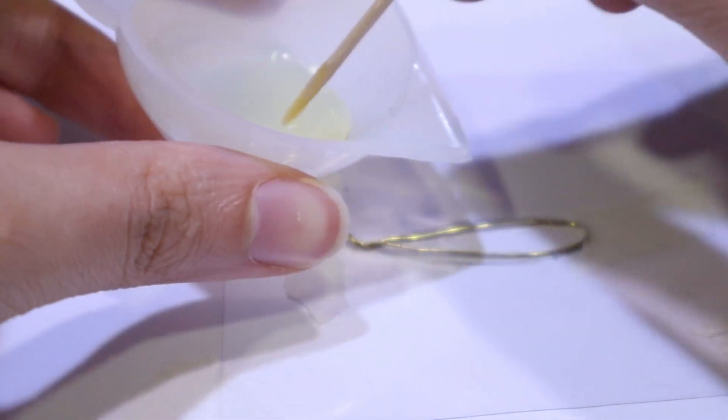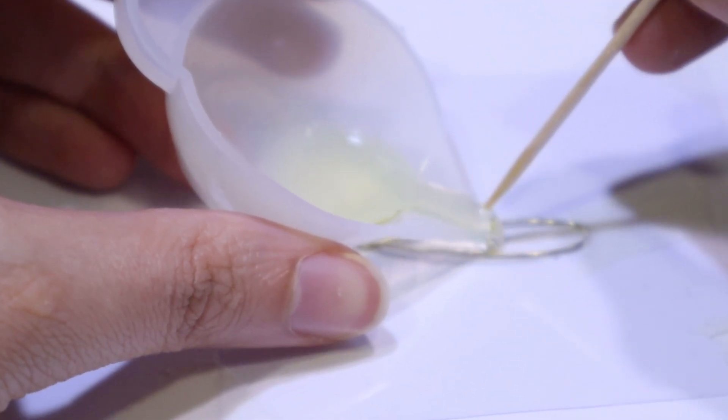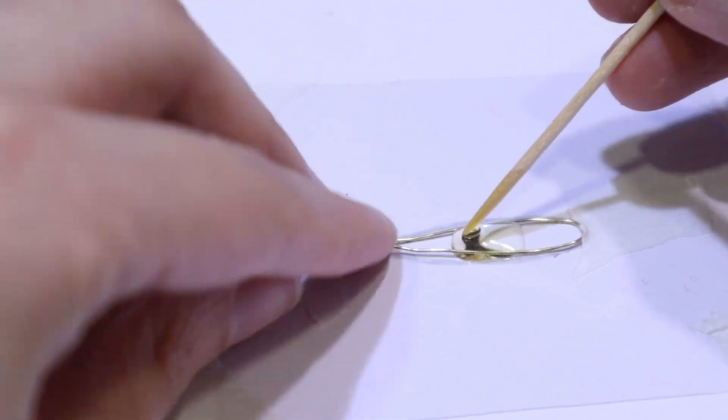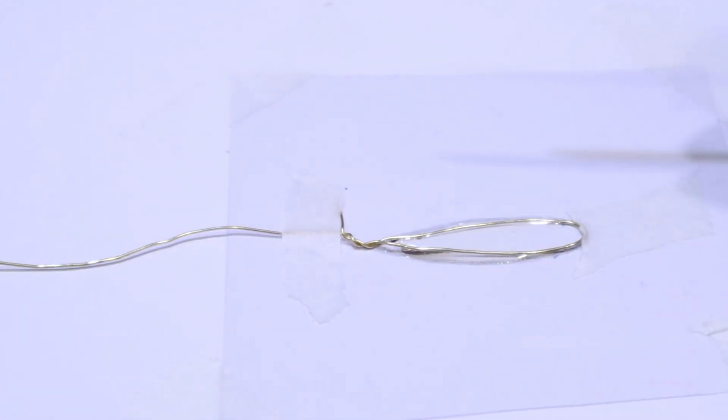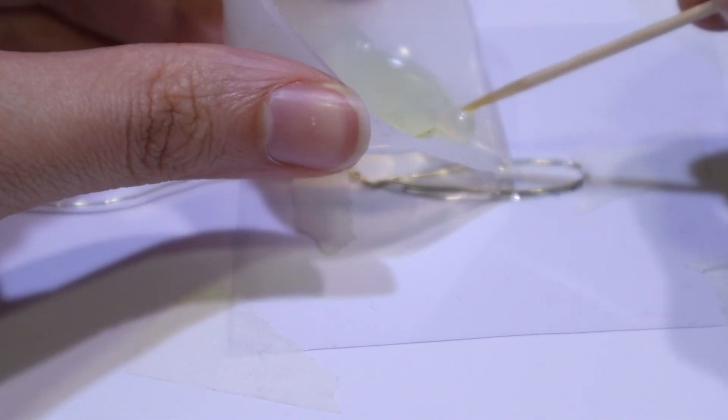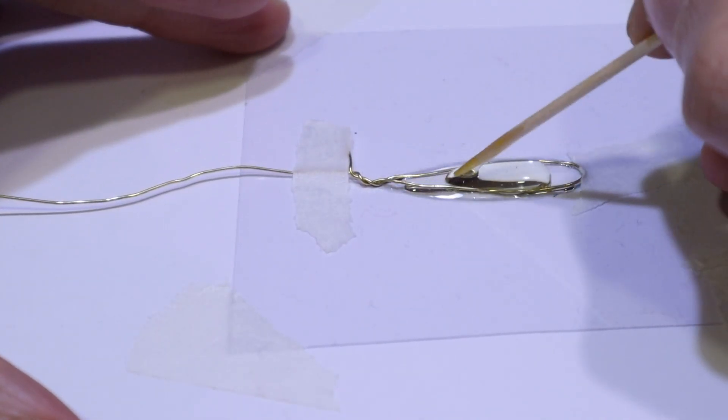I pour a thin layer and dry it under the lamp. I keep adding layers until it fits the other bead.